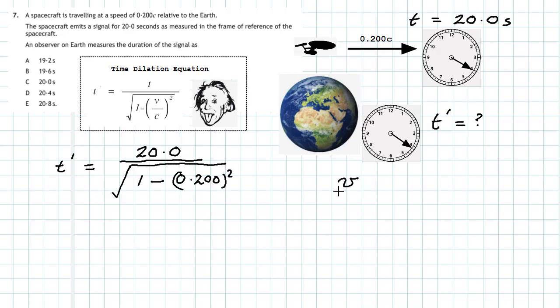We know that we have v divided by c, and v is given as a factor of the speed of light, 0.200c. So we divide that by c, you can see the two c's cancel out, and we can just put in 0.200 squared into the function. So it works out that t', the time that we measured, if we do that calculation, turns out to be 20.04 seconds. So we actually measure on Earth the event to be 0.04 seconds longer. Our answer is going to be D.